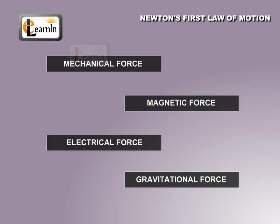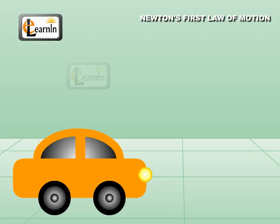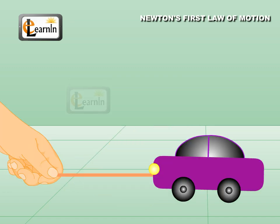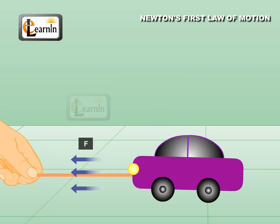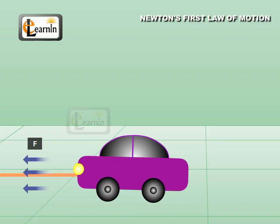Acting on bodies. Consider a toy car which rests on the floor. If you push it with your hand, it moves forward in the direction of the push. Similarly, if you pull the toy car by connecting a thread to it, the car moves forward in the direction of the pull.